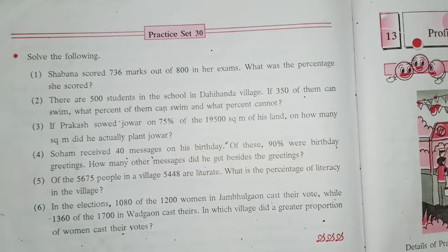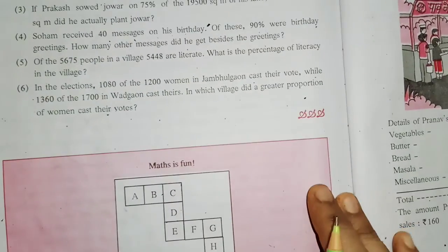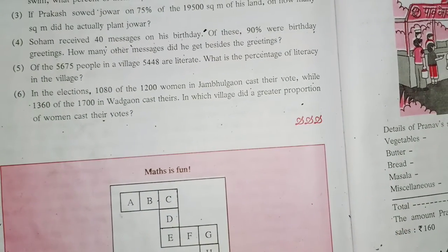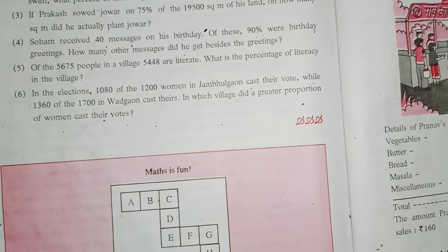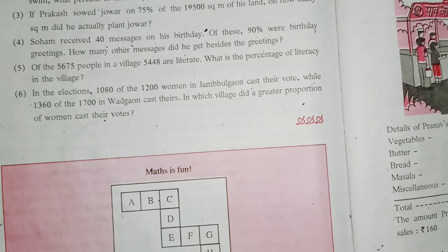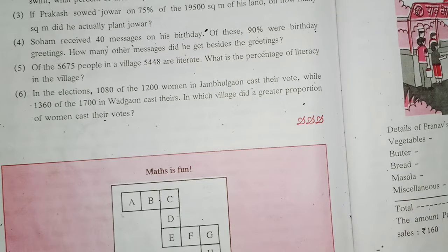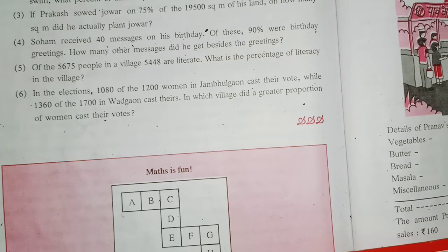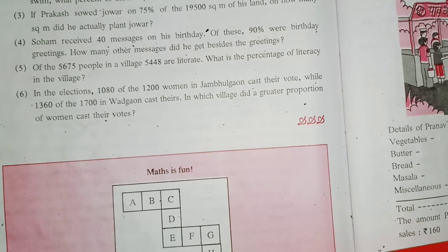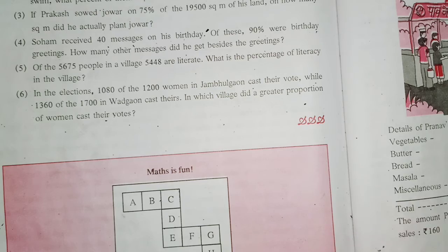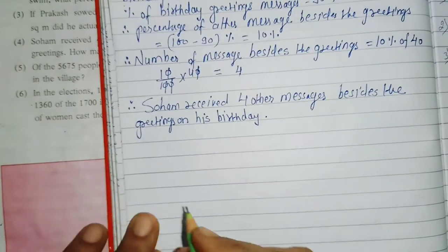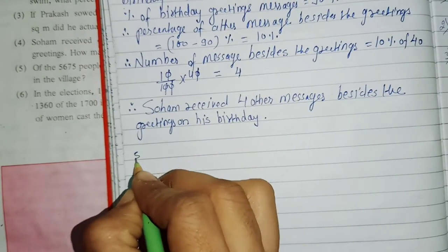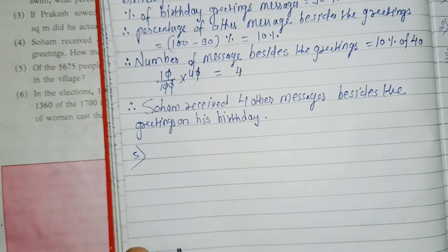Of the 5,675 people in a village, 5,448 are literate. What is the percentage of literacy in the village? So children, let's start the solution for question number 5.